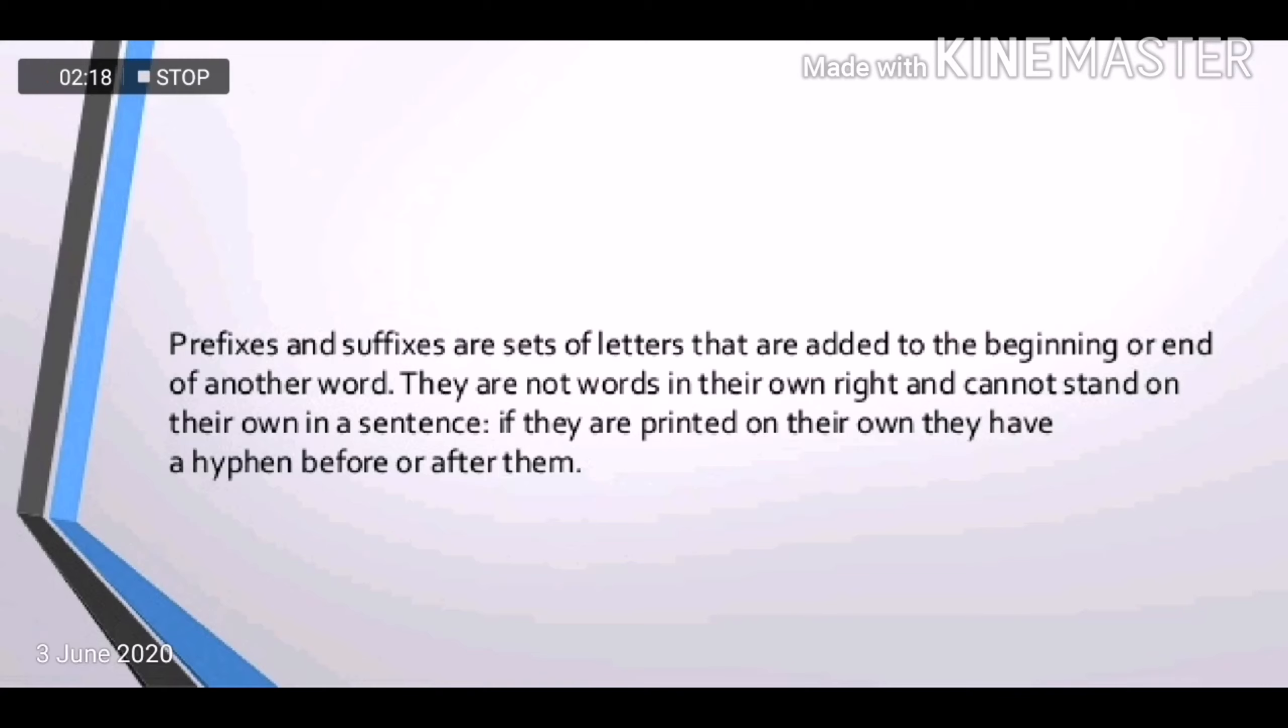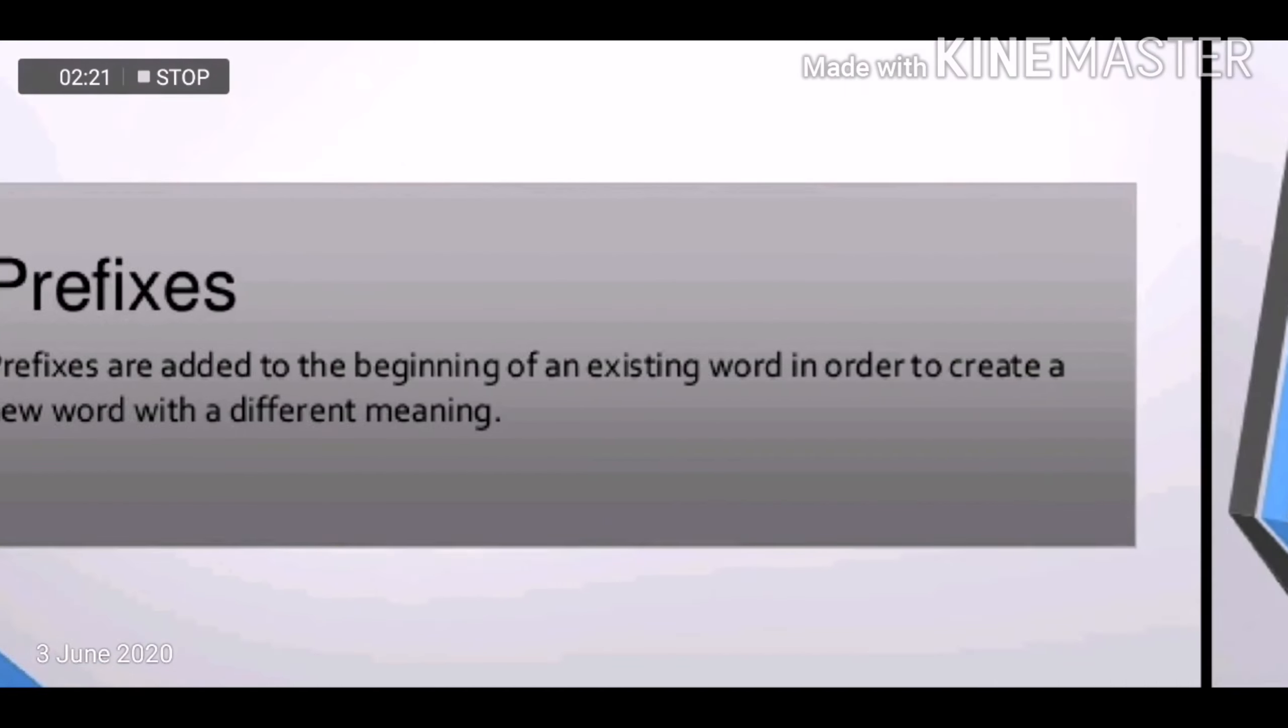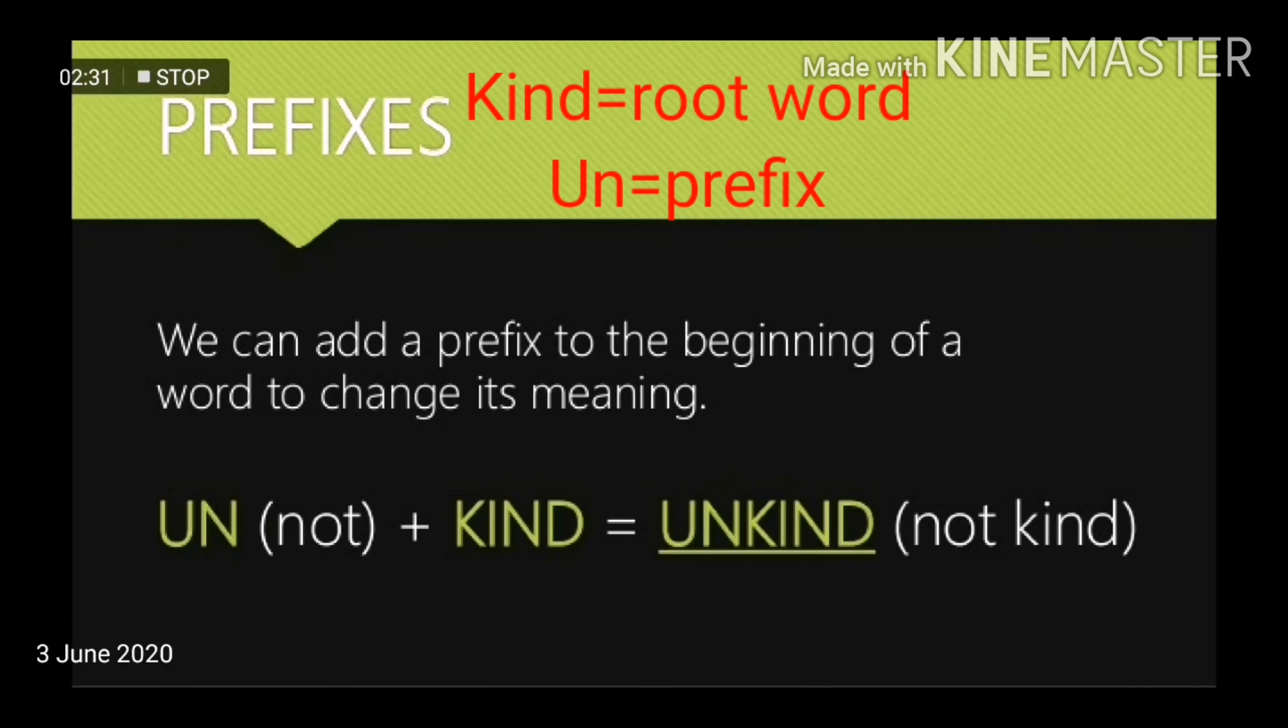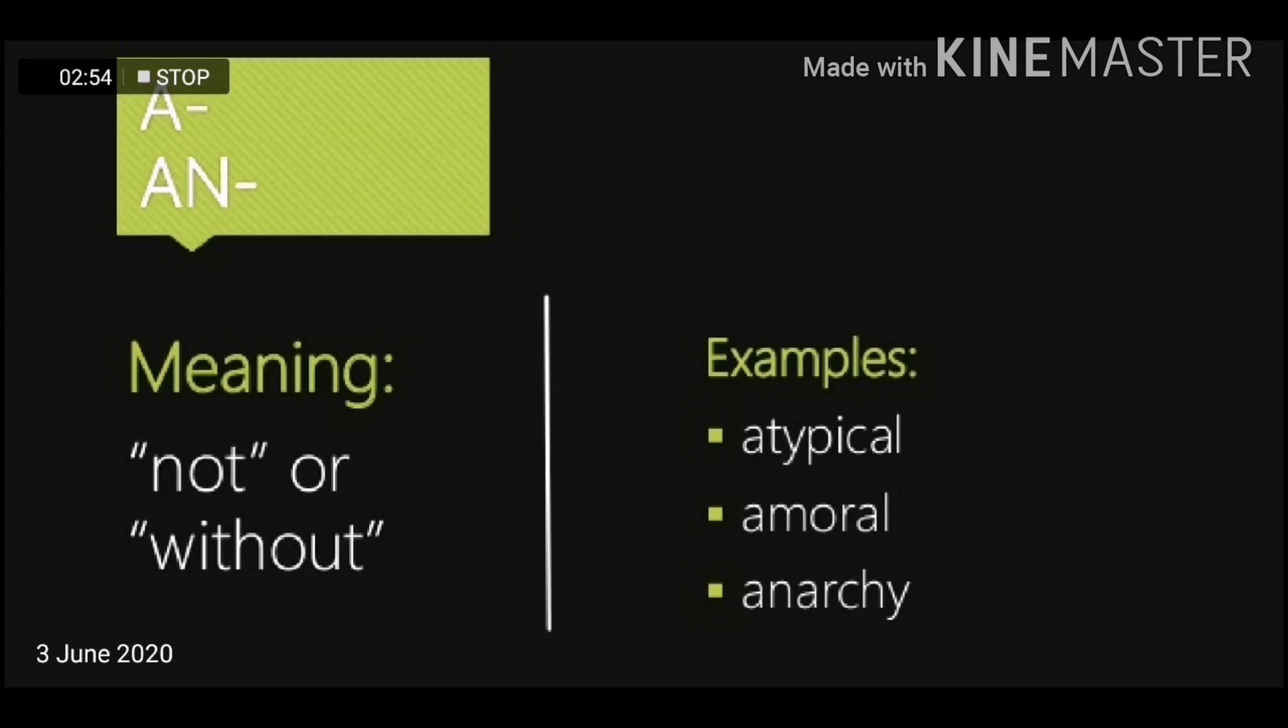And our topic today relates to derivation. And affixation itself is a type of derivation. So in short, affixation has two types in English. And here in this video we will talk about only prefixes. So prefixes are added to the beginning of an existing word in order to create a new word with a different meaning. It changes their structure and their meanings.